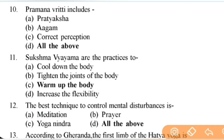These questions are equally important for the UGC NET exam. Next: Pramana-vritti includes — check options — right answer is D — all of the above: Pratyaksha, Agama, correct perception.